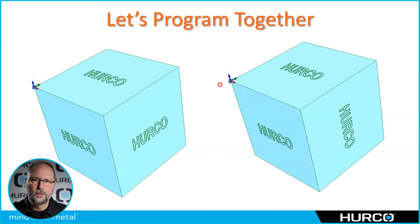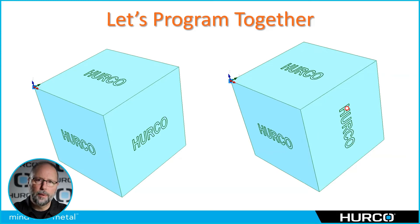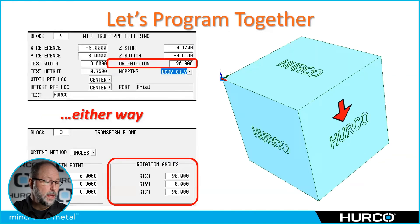If we use our traditional transform plane like we've been doing and we just rotate around the y-axis to the right side, that would work very well but our HERCO would be running up and down, so it would be 90 degrees out from where it should be.